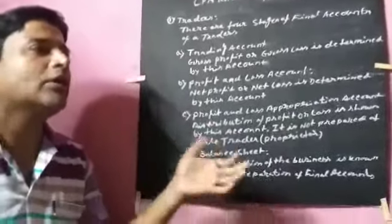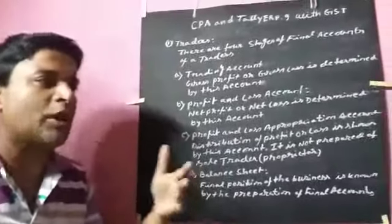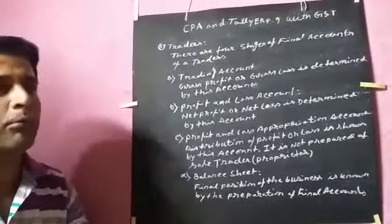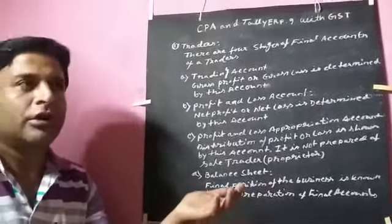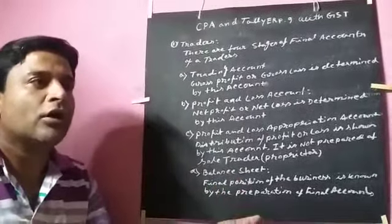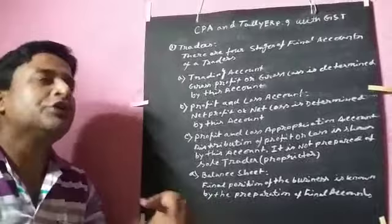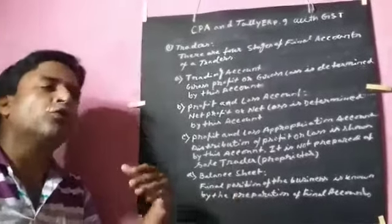Today, in our modern business environment, there are many kinds of businessmen. Number 1, traders. Number 2, manufacturer. Number 3, retailer. Number 4, wholesaler.